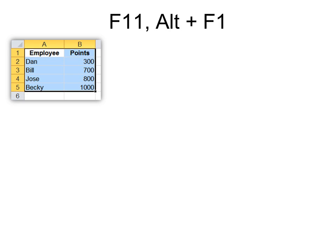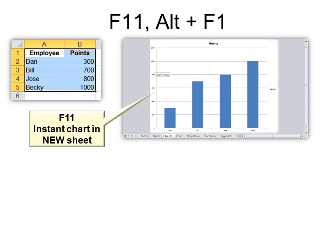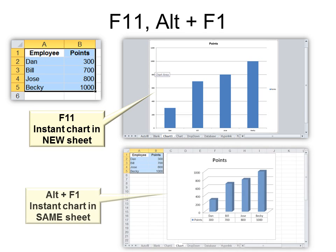F11 and Alt+F1 do the same thing but a little differently. If you've selected the data you want to chart and hit F11, it instantly creates a new chart on a new sheet. However, if you don't want a full sheet — just a chart next to the data — use Alt+F1, because that creates an instant chart in the same sheet. Simply highlight the data and hit Alt+F1 or F11.